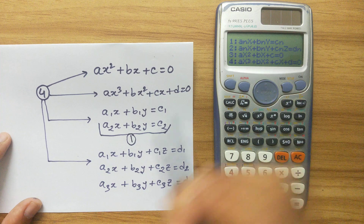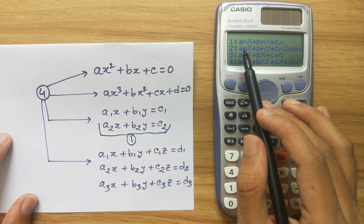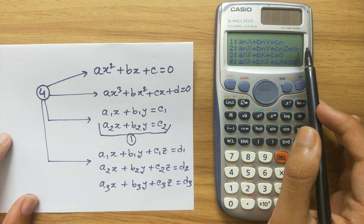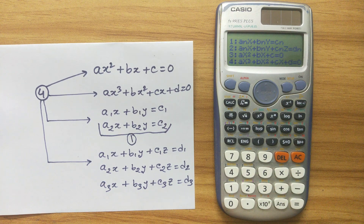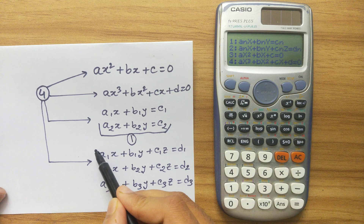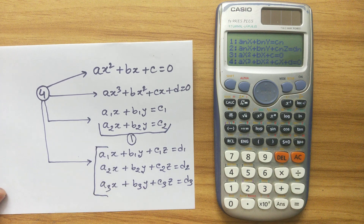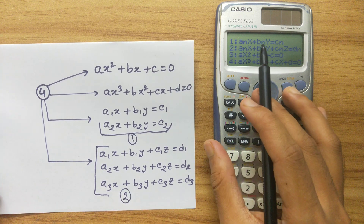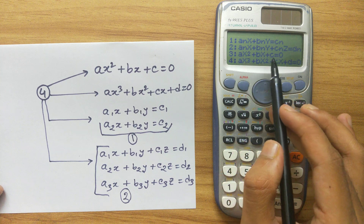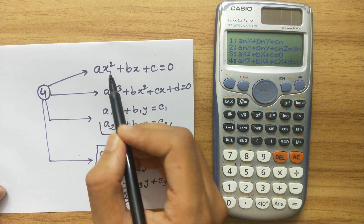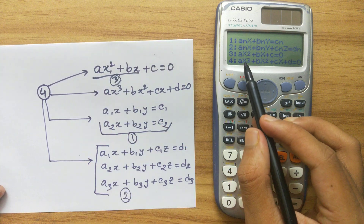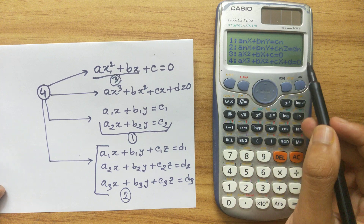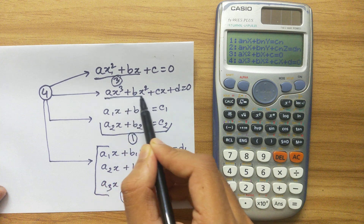Option 2 has three variables, which matches our fourth equation type — three equations with three variables. Option 3 on the calculator is AX squared plus BX plus C equals 0, which is our first type. And option 4 is AX cubed plus BX squared plus CX plus D equals 0, which is our second type.